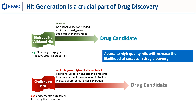Hit generation is a crucial part of the drug discovery process. This slide shows two contrasting scenarios: one where you start with challenging hits, and one where a programme commences with high-quality hits. In the example with challenging hits, it will take multiple years, with a greater chance of failure, to realise a drug candidate — additional validation and screening will be needed, and a longer, more complex, multi-parameter optimisation will be required, increasing effort for hit-to-lead generation. In contrast, where a program begins with high-quality hits, it will take significantly less time to retrieve a drug candidate, no further validation will be needed, and there will be rapid hit-to-lead generation. This webinar will show how access to high-quality hits increases the likelihood of success in drug discovery.